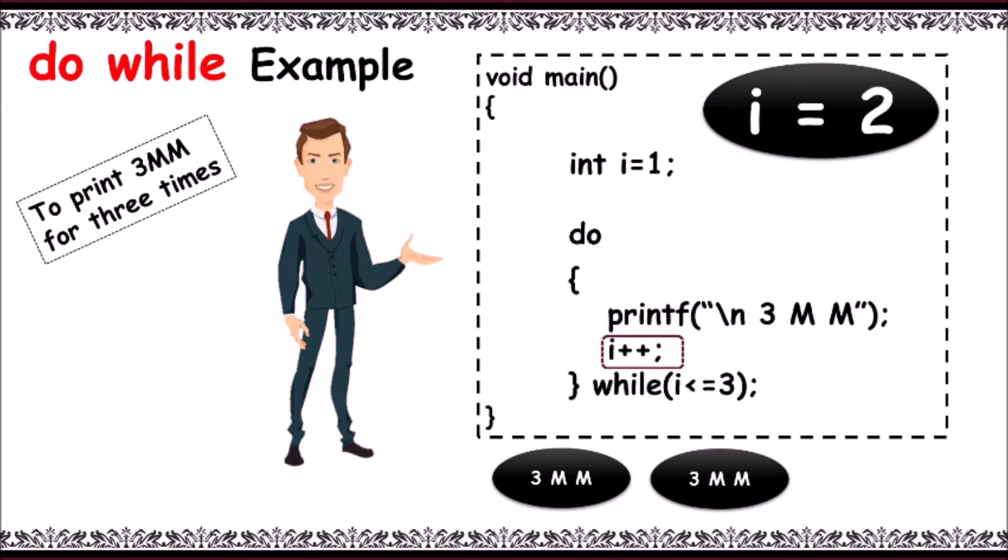Now i equals three. Again condition is verified with i less than or equal to three, that is three less than or equal to three. As the condition is true, control goes back to the starting and prints 3MM again.